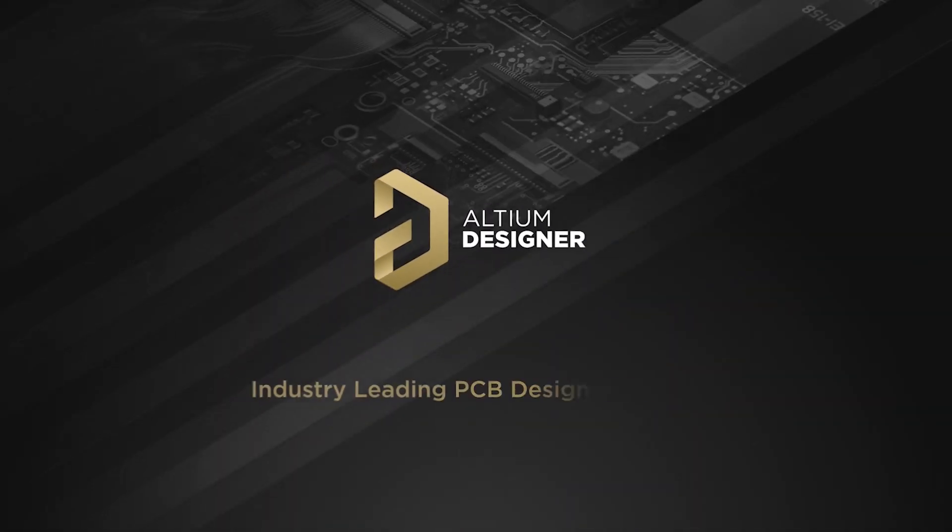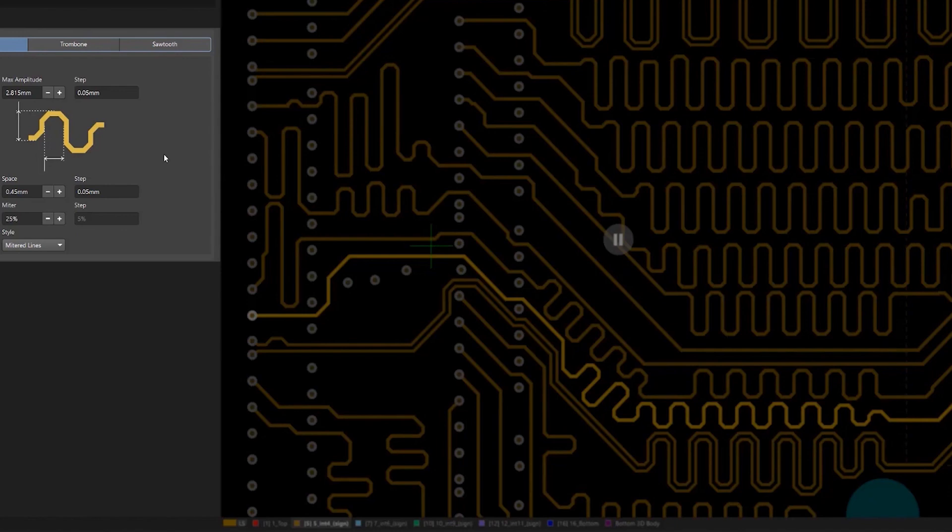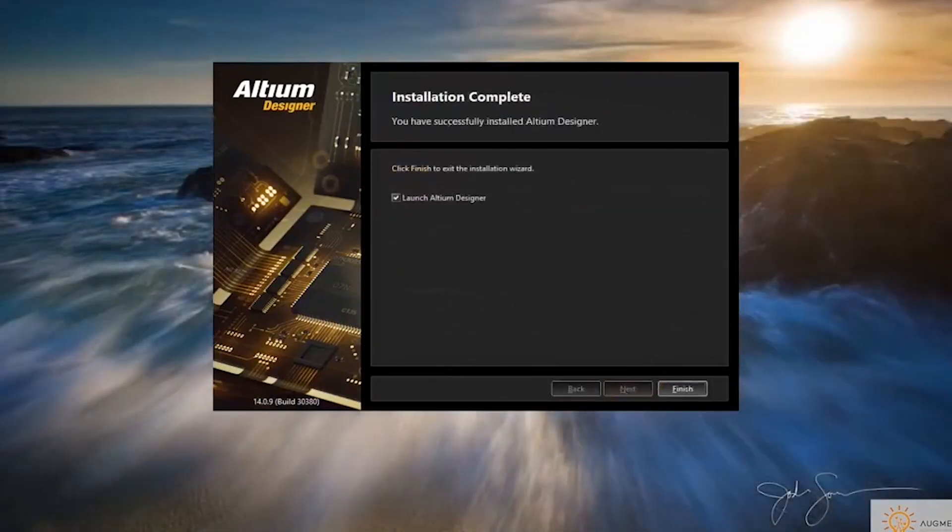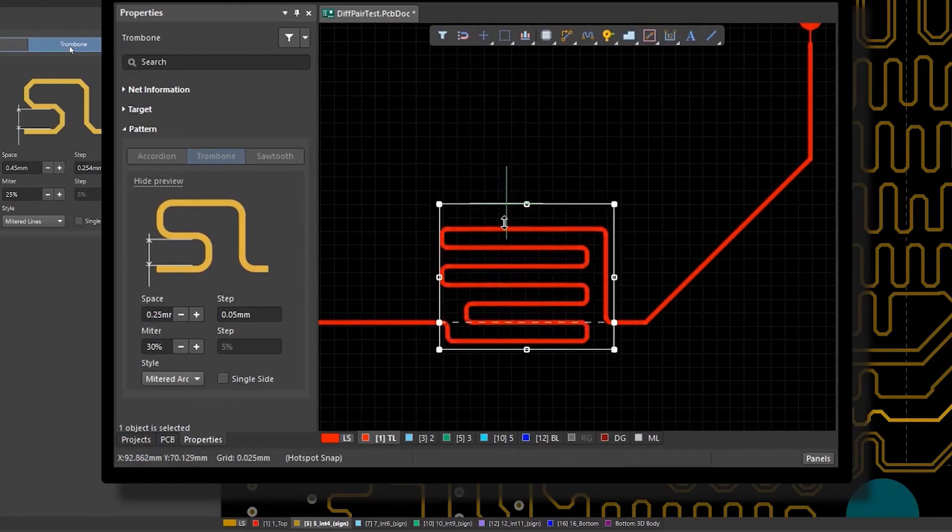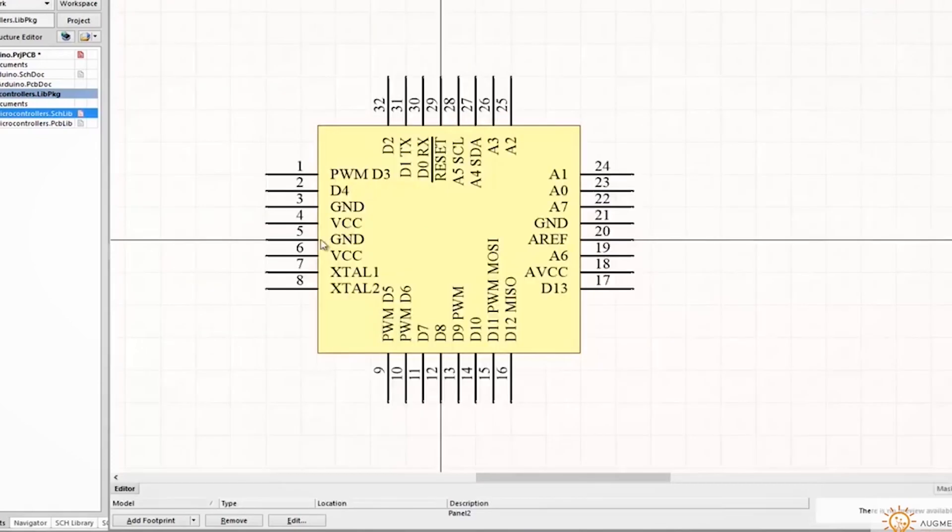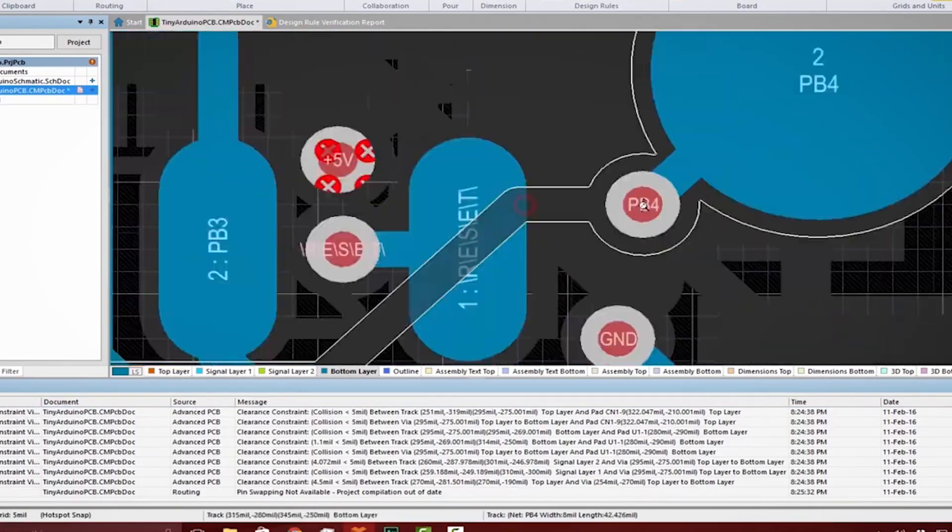This video is sponsored by Altium, the industry standard and most professional PCB design software on the market. I've used Altium for designing printed circuit boards to build my own custom Arduinos and high-speed on-edge computer vision projects. When I tested other PCB CAD software out there, I found that nothing came close to the flexibility, ease of use and power of Altium Designer.